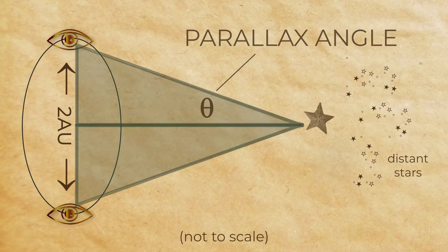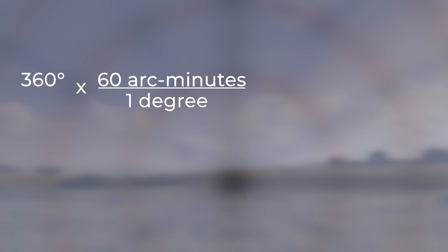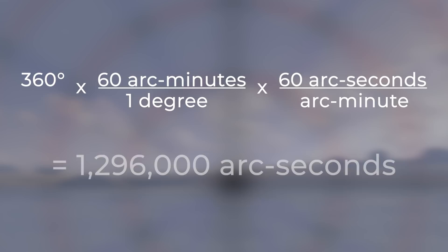Now where do seconds come in? We're not talking time — we're talking parts of a circle. Imagine the sky is an enormous circle. There are 360 degrees in the circle, and each degree can be divided into 60 minutes of arc. Each one of those minutes of arc can be divided into 60 seconds. That means there are 1,296,000 arc seconds in the circle.